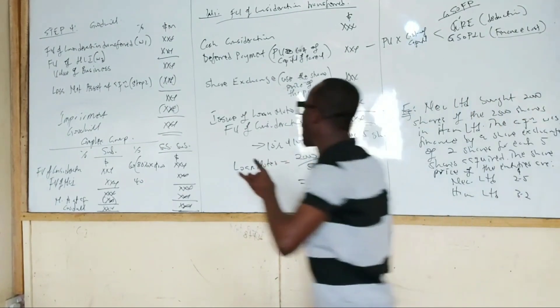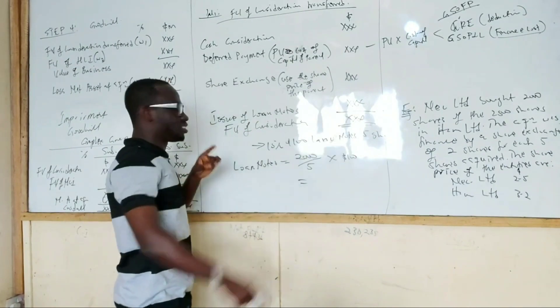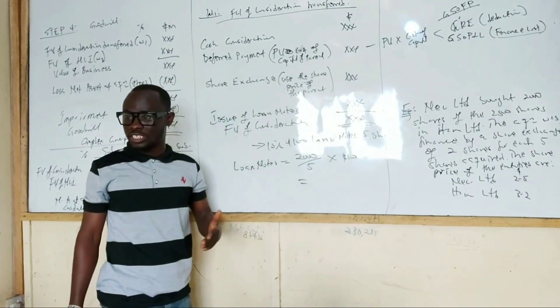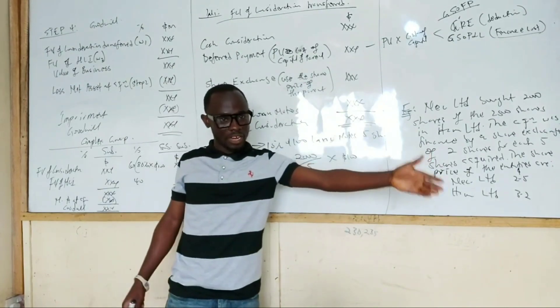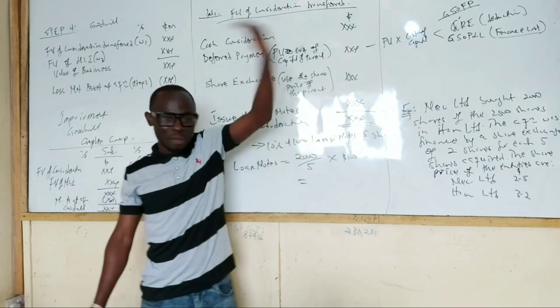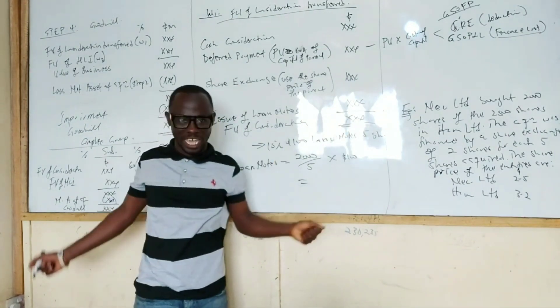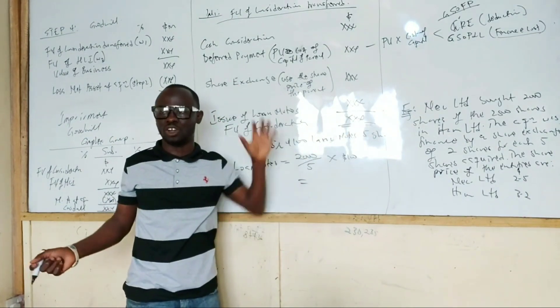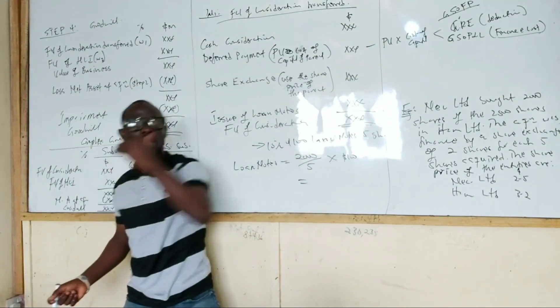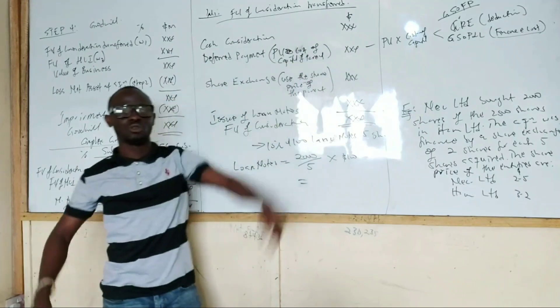But remember, when you go to the balance sheet, it will not be there. Because one rule about consolidation is that the parent is not supposed to owe the subsidiary. The subsidiary is not supposed to owe the parent. So when you go to the balance sheet, that loan note should not be there. It should not be part of the loan note on the consolidated financial statement. It will be on their individual account, but you will go and cancel it out when you are doing the consolidation.